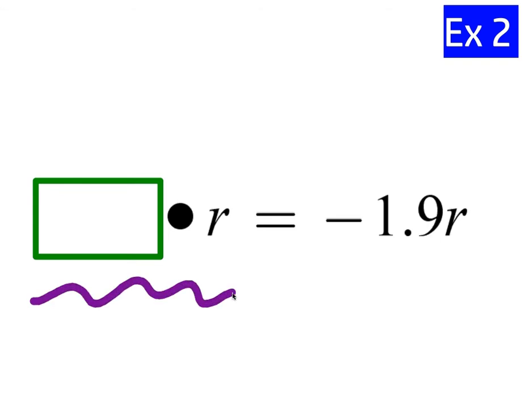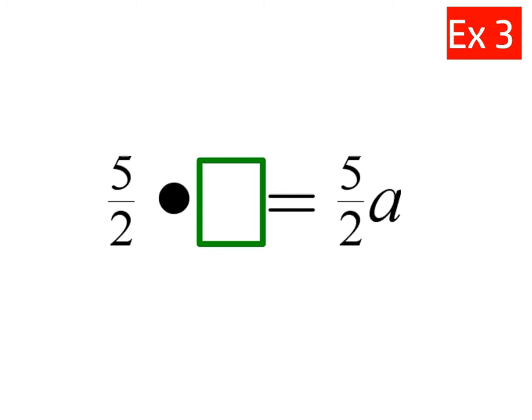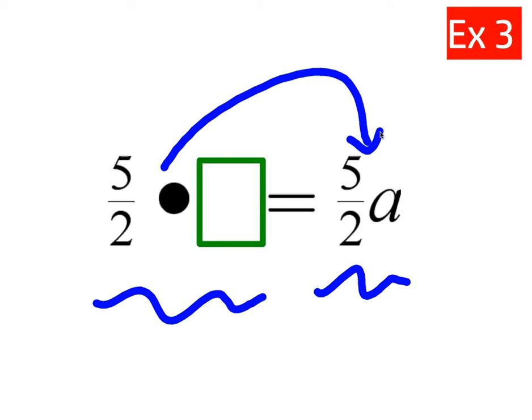Okay, next example. What number times R gives you negative 1.9R? Well, all we actually did is get rid of the multiplication sign, right? And if that's true, then these two numbers must be the same. Therefore, the answer is negative 1.9. Negative 1.9 times R gives you negative 1.9R. Okay, 5 halves times what gives you 5 halves A? Well, if we're just getting rid of the multiplication sign, then that means that this and this must be the same, and therefore the answer is A.